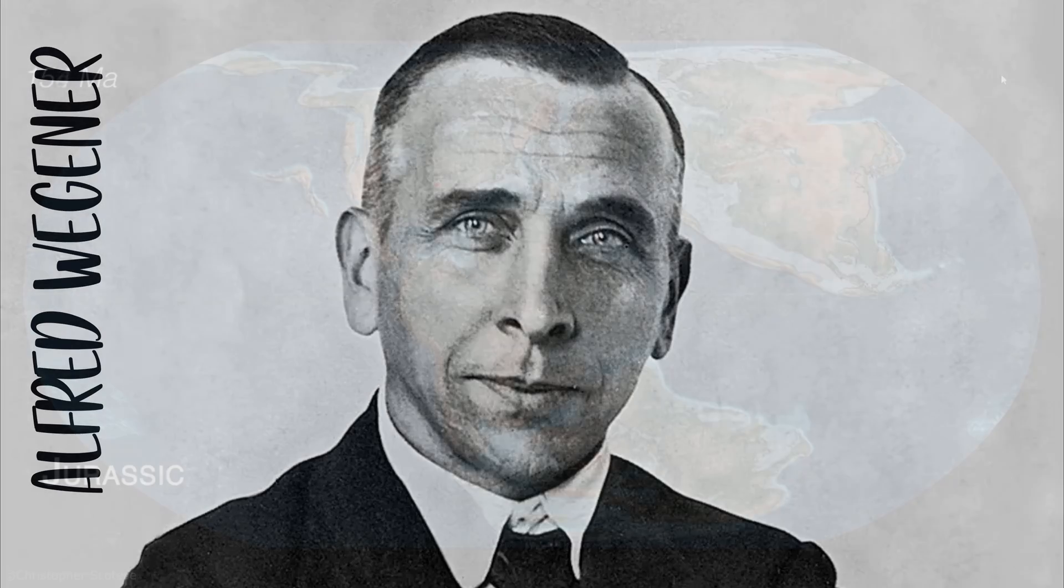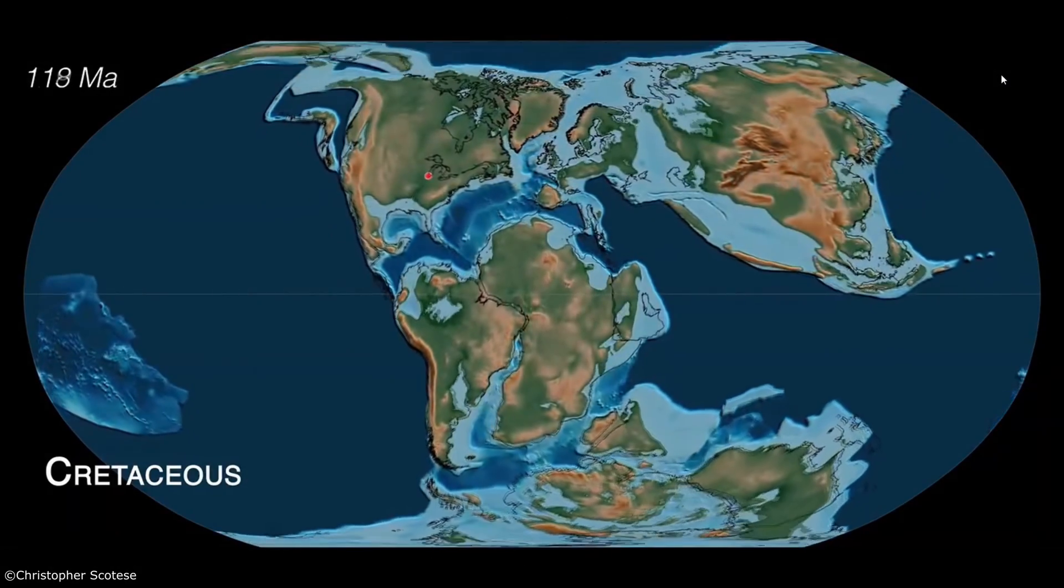So, after a lifetime dedicated to demonstrating the movement of the continents, Wegener died forgotten and scorned by the vast majority of scientists who didn't take his work very seriously. And for more than 20 years, his work fell into oblivion. His biggest problem was that he couldn't explain why continental drift occurred.